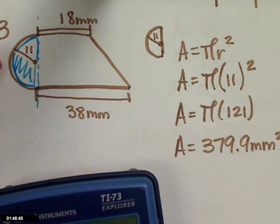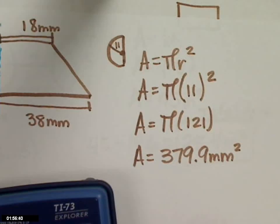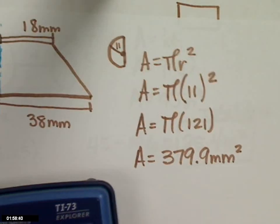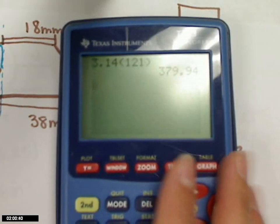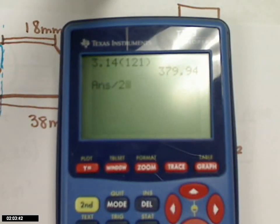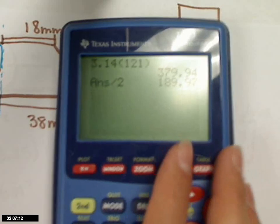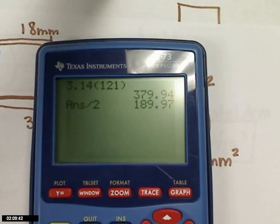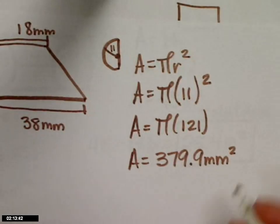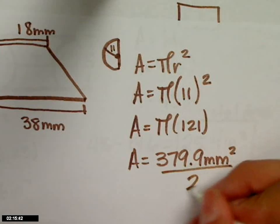Don't you have to divide it in two? Oh, don't I have to divide it in two? Why would I divide it by two? Because it's not a full circle. It's half a circle. Nice. So we're going to take 379.9 and divide that by two. And I get 189.97. So how do I round that to the nearest tenth? 190.